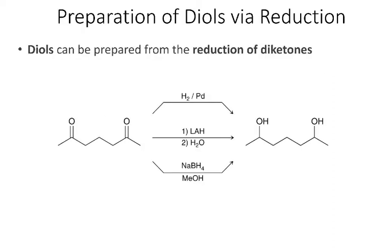In the last video, we talked about how we can make alcohols from the reductions of ketones and aldehydes. If I have two keto groups or a ketone and an aldehyde, I can use all of the reactions we learned in the last video - either catalytic hydrogenation, lithium aluminum hydride, or sodium borohydride - to convert the diketone into the diol.